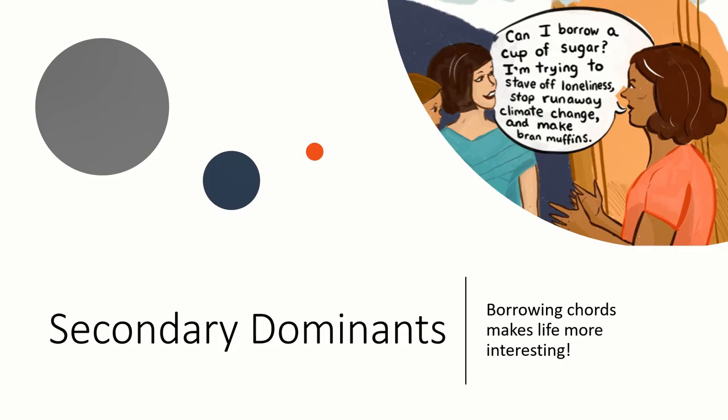A reminder that there was no secondary dominant going to chord seven, because it's impossible to resolve one dominant function chord onto another chord which is also a dominant function. So you need to resolve a secondary dominant usually onto a major or minor chord. These are secondary dominant triads.